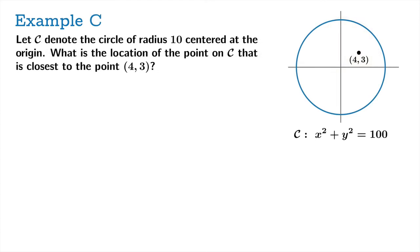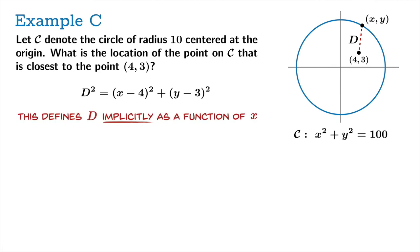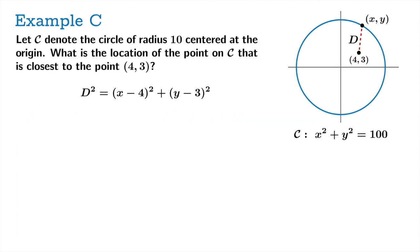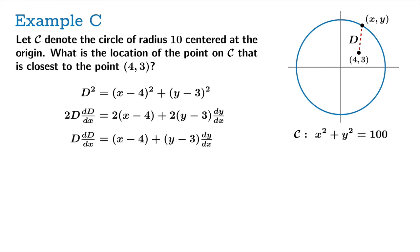Example C. Let C denote the circle of radius 10 centered at the origin. What is the location of the point on C that is closest to the point (4, 3)? We choose a point on the circle and let D denote the distance. The Pythagorean formula gives D squared equals the quantity X minus 4 squared plus the quantity Y minus 3 squared. We allow this to implicitly define D as a function of X, since extracting the square root and differentiating would be much messier.